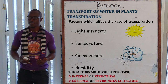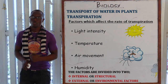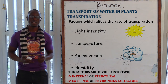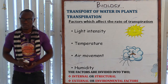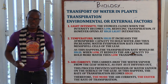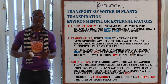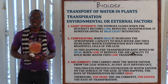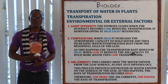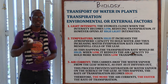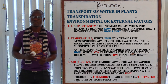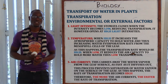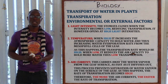Factors affecting transpiration are divided into internal structural factors and external environmental factors. Starting with environmental factors: in high light intensity the stomata open, increasing the rate of transpiration. Regarding temperature, high temperatures increase the capacity of the atmosphere to hold water, increasing evaporation from the mesophyll cells of the leaf and thus increasing the rate of transpiration. On low temperature, there is reduced air capacity to hold more water, so the rate of transpiration will be very low.